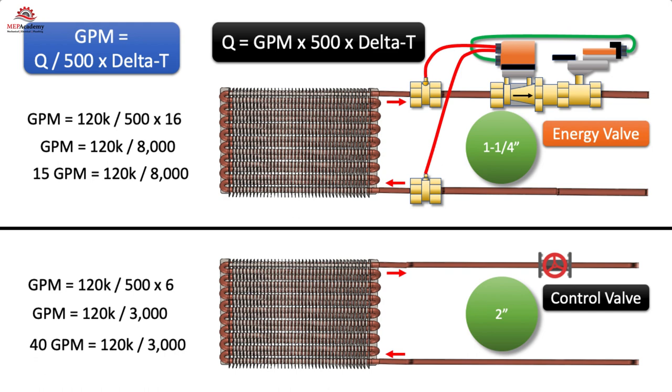We can look at the difference between maintaining delta T with an energy valve and the traditional system. We converted our formula to solve for GPM. Using a heat load of 120,000 BTUs per hour, or 10 tons, we get 15 GPM if the energy valve is maintaining the delta T at a set point of 16 degrees. The traditional system has slipped to a 6 degree delta T, requiring 40 GPM to get the required heat transfer. This additional GPM causes an increase in pump energy and would require larger piping. The size of the piping for the energy valve system would be 1 1/4 inch, while a traditional system would require 2 inch to match the same heat transfer quantity.